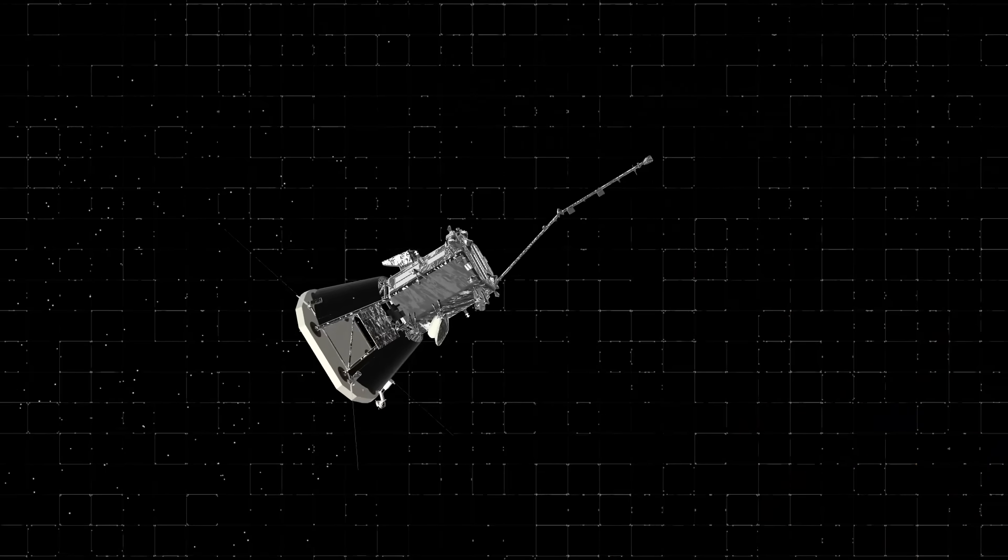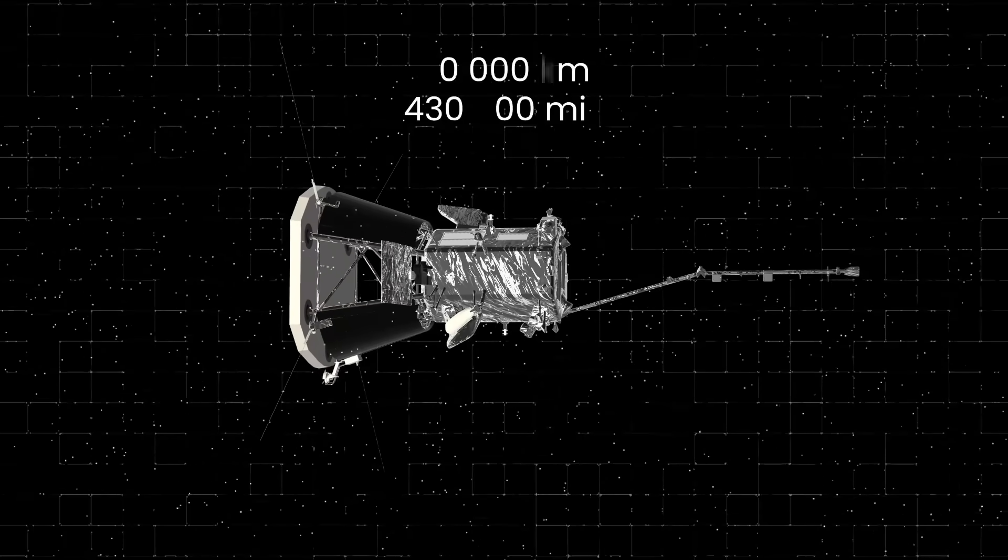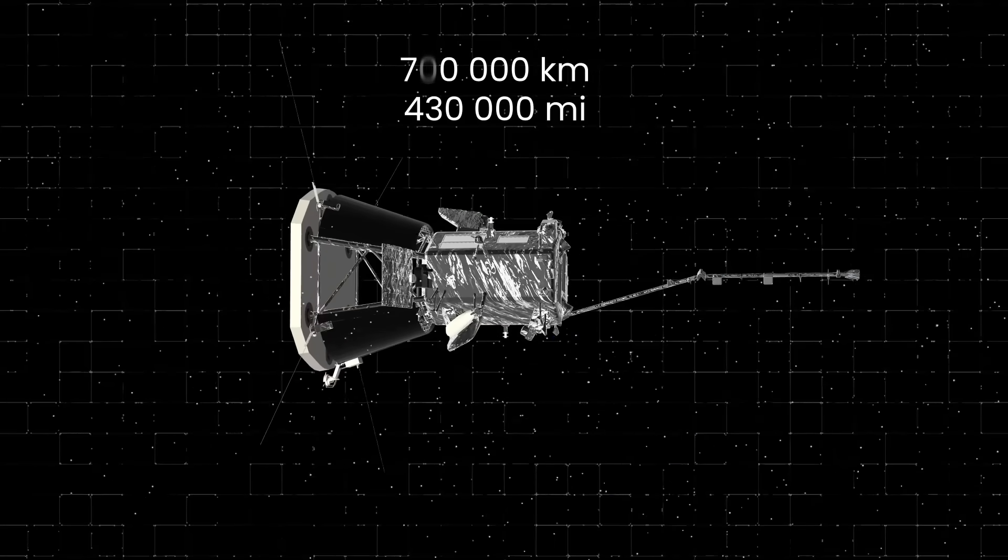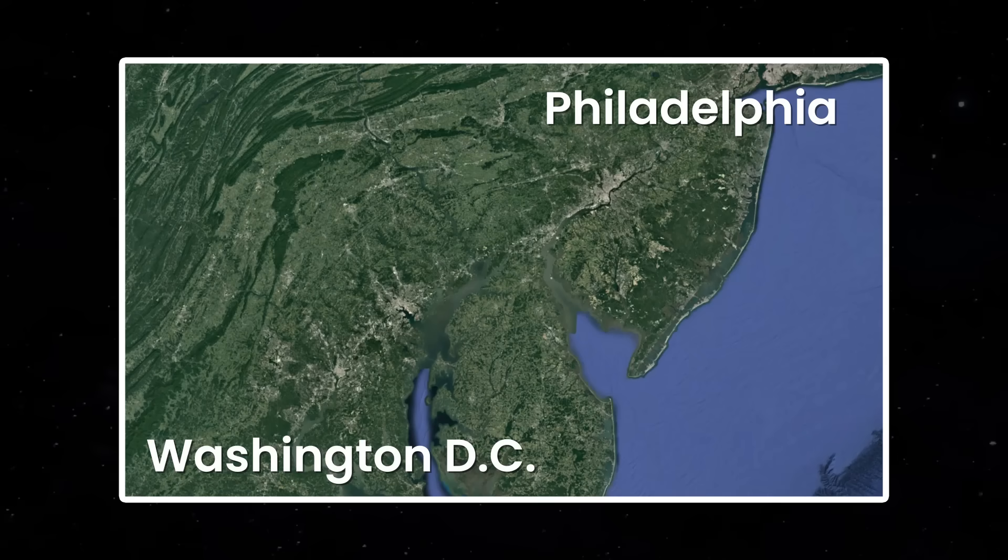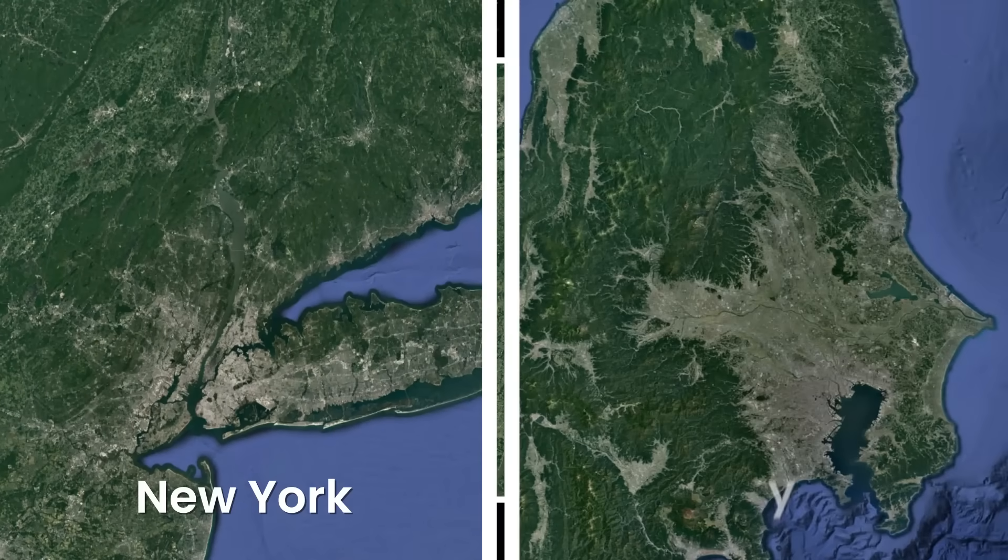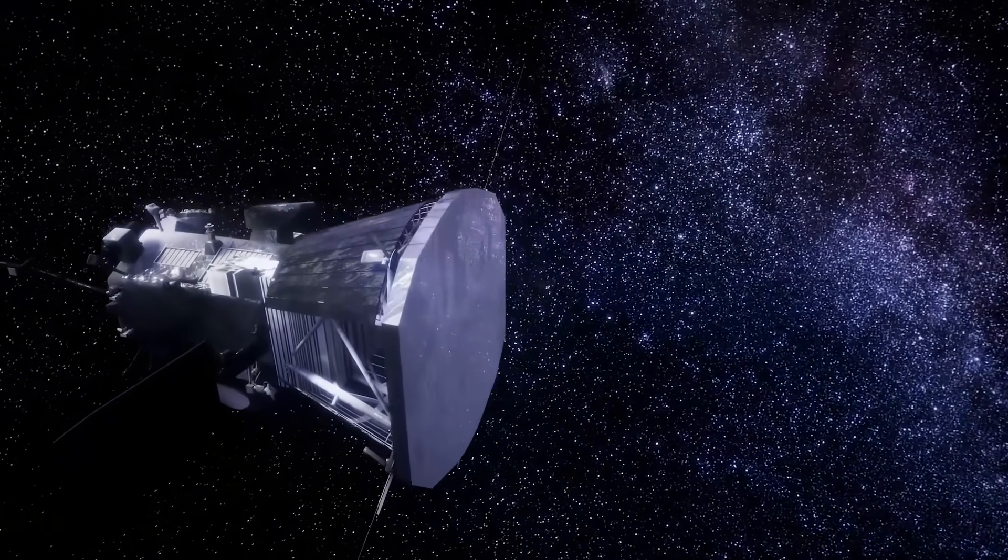Aside from that, Parker is also breaking space speed records. During one of its approaches, it was moving at about 700,000 kilometers per hour. At that speed, it would take Parker about one second to get from Philadelphia to Washington DC, or less than a minute from New York to Tokyo. This makes it the fastest human object ever made.